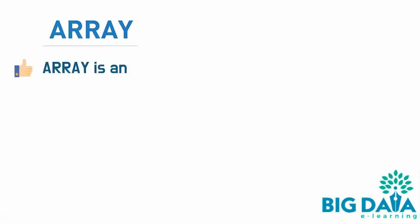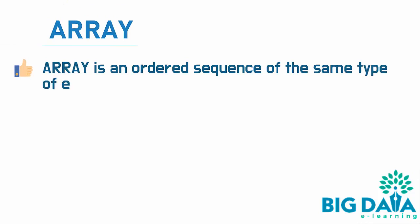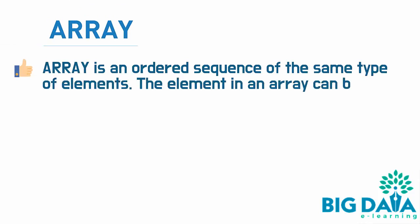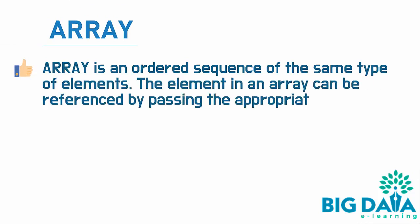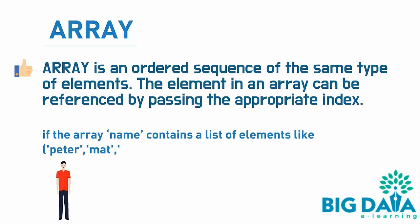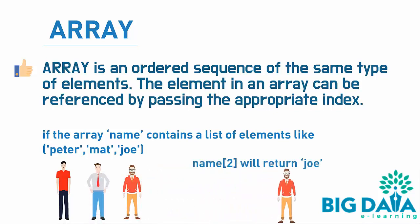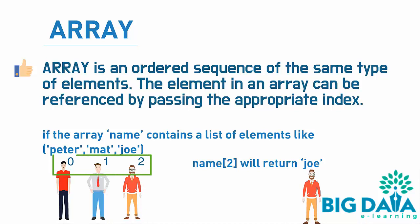Array is an ordered sequence of the same type of elements. The element in an array can be referenced by passing the appropriate index. For example, if the array name contains a list of elements like Peter, Matt, Joe, then passing index 2 to the column will return Joe, since Joe is at index 2. Remember, an array starts with index 0.